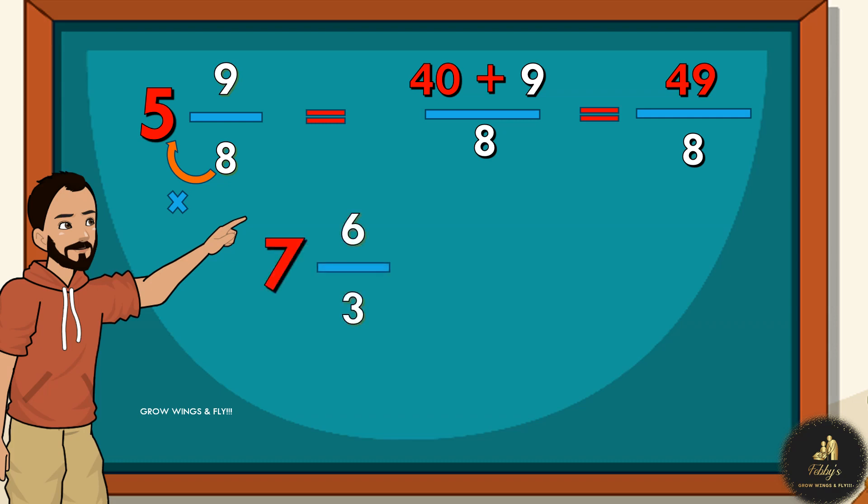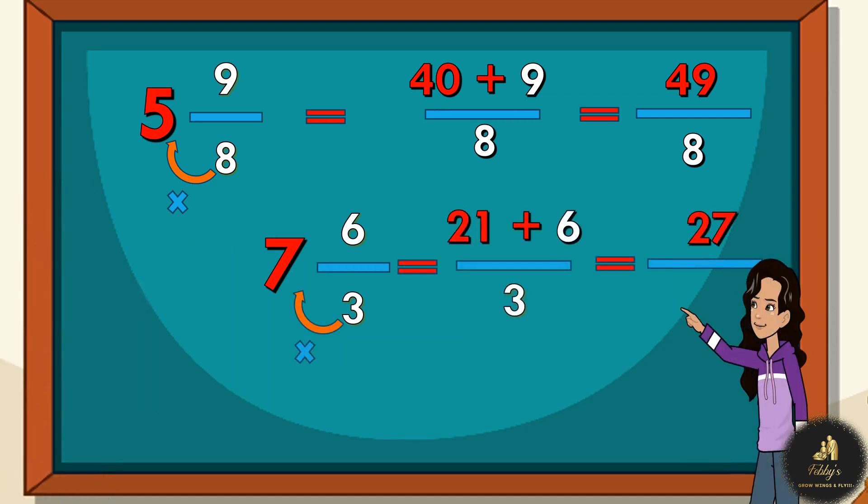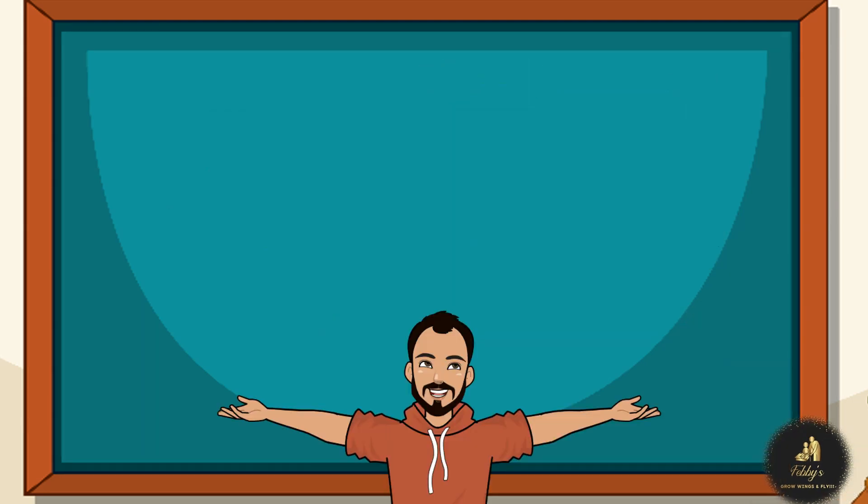Okay. Here's another one for you to try. Alright. I'll give it a try, Angel said. So, for me, that is 7 times 3, which is 21. And then, I add the 6. So, that's 27. And I put the denominator as 3. So, that is 27 over 3. Am I right? You are absolutely right.